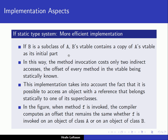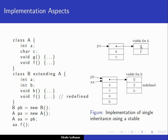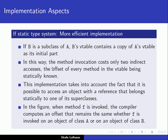If B is a subclass of A, B's virtual table contains a copy of A's V-table as its initial part. For example, the function G, which is only defined in A, also appears in the V-table for B. The V-table for A has F, which is redefined in B's V-table. With this implementation, the method invocation costs only two indirect accesses, and the offset of every method in the V-table is known at compile time.